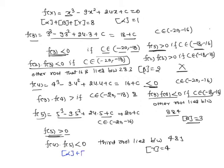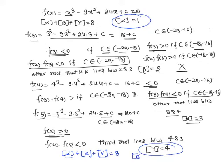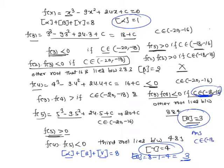We need ⌊α⌋ + ⌊β⌋ + ⌊γ⌋ = 8. We know ⌊α⌋ = 1 and ⌊γ⌋ = 4, so ⌊β⌋ = 8 - 1 - 4 = 3. This requires ⌊β⌋ = 3, which occurs when c ∈ (-18, -16). So the answer is c ∈ (-18, -16). In the other case, ⌊β⌋ = 2 gives sum = 1 + 2 + 4 = 7 ≠ 8, so that case is rejected.